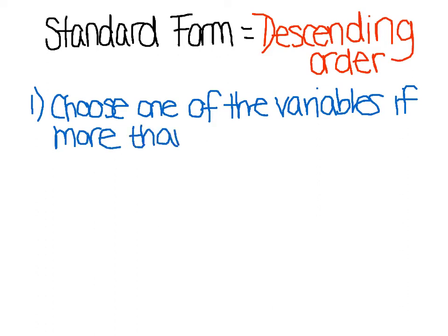The first thing we're going to do is choose one of the variables if more than one is present. This means that if we had something like 5xyz plus 2x squared y, you have to pick one of those variables to put in order. We tend to pick x if x is offered, but I would just go with alphabetically whichever letter comes first.